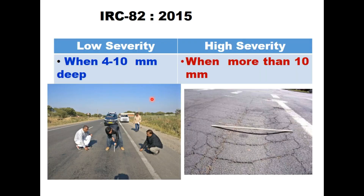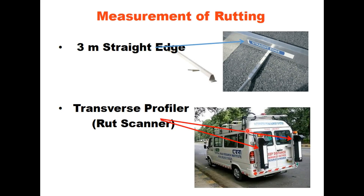IRC 82 categorizes rutting in two categories: low severity and high severity. When rutting is 4 to 10 millimeters deep it is of low severity; when it is more than 10 millimeters it is of high severity. Rutting can be measured either by using a 3-meter straight edge or by a transverse profiler. With the 3-meter straight edge, it is placed between two lanes or between the crown and the pavement edge on a two-lane road, and the maximum gap between the straight edge and the pavement surface is measured.